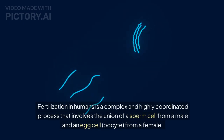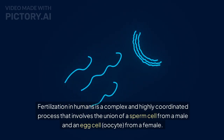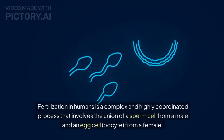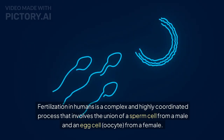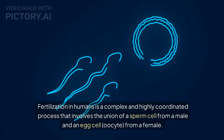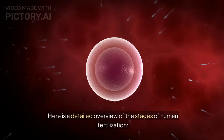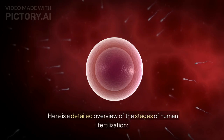Fertilization in humans is a complex and highly coordinated process that involves the union of a sperm cell from a male and an egg cell, or oocyte, from a female. Here is a detailed overview of the stages of human fertilization.